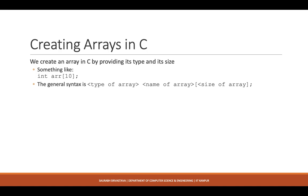In C, the syntax to create an array is very simple. You write the type — for example int — then the name of the array, such as arr, followed by square brackets containing the size. Square brackets have a specific meaning in programming, which is why you use parentheses for mathematical expressions instead. The size inside the square brackets defines how many variables are in this collection.